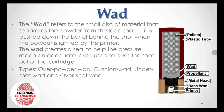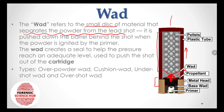The wad refers to a small disk of material that separates the powder from the lead shot. It is pushed down the barrel behind the shot when the powder is ignited by the primer. The wad creates a seal to help the pressure reach an adequate level to push the shots out of the cartridge. Different types of wad include: overpowder wad, cushion wad, undershot wad, and overshot wad.